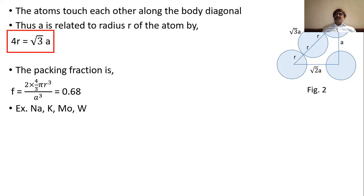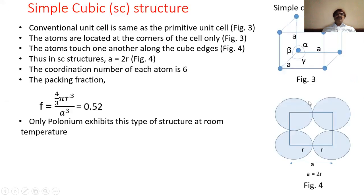Loose packed structures are recognized by two things: coordination number less than 12 and packing fraction less than 0.74. For BCC the packing fraction is 0.68, confirming it as a loose packed structure. Now let us go through the next loose packed structure, the simple cubic (SC) structure.